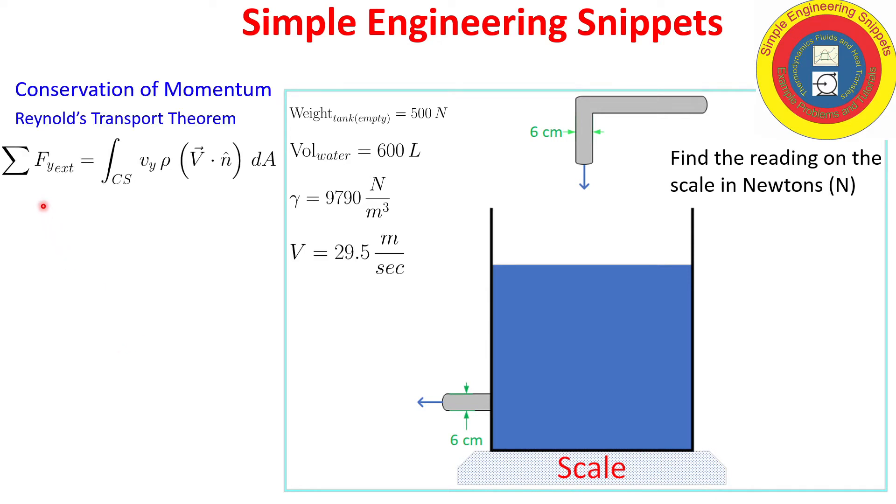All right, to solve this problem we are going to be using the integral form of conservation of momentum. As usual, the good first step is to define a coordinate system. And here we have y in the up direction and x positive in the right direction. And as I stated earlier, we need a control volume. So let's define our control volume with this gold dash line.